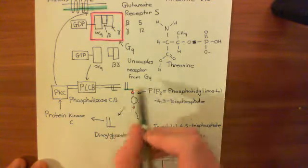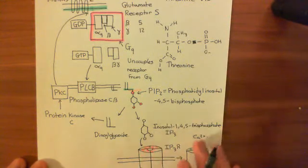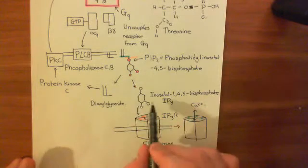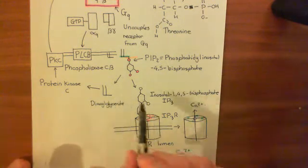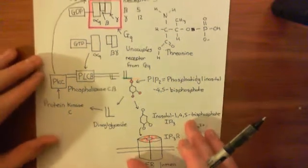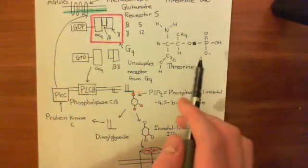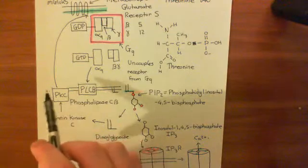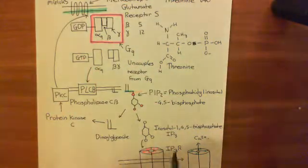IP3 is also going to be degraded by phosphatases which break off the phosphate groups. Once degraded, it stops activating the IP3 receptors. With protein kinase C activity going down, the phosphate group on threonine 840 eventually gets cleaved off and is not put back on. So the receptor becomes active again, goes through all of this pathway again to produce IP3 back up — so you get oscillatory action.